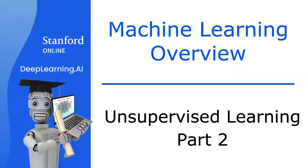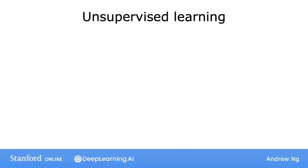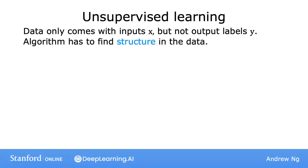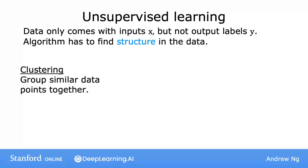In the last video, you saw what is unsupervised learning and one type of unsupervised learning called clustering. Let's give a slightly more formal definition of unsupervised learning. Whereas in supervised learning, the data comes with both inputs x and output labels y, in unsupervised learning, the data comes only with inputs x but not output labels y, and the algorithm has to find some structure, pattern, or something interesting in the data. We've seen one example called a clustering algorithm, which groups similar data points together.